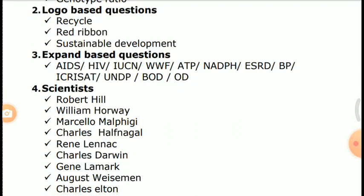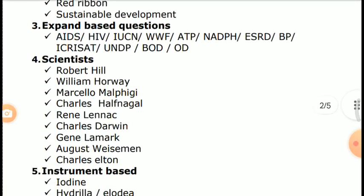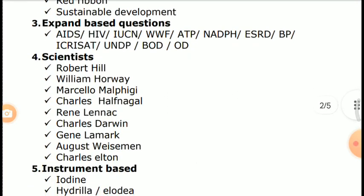Third category: Expand-based questions (abbreviations). Important abbreviations to expand include AIDS, HIV, IUCN, WWF, ATP, NAD, PH, ESRD, BP, ICRISAT, UNDP, and BOD.